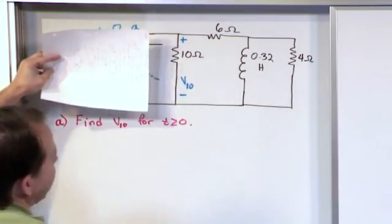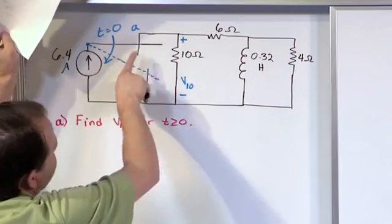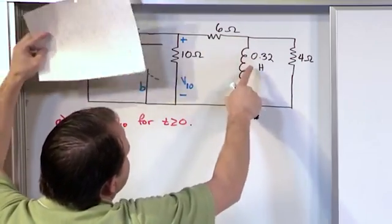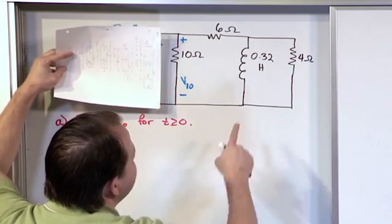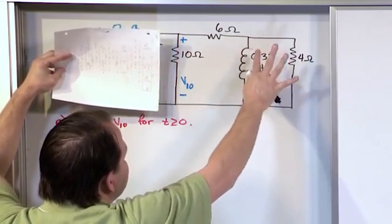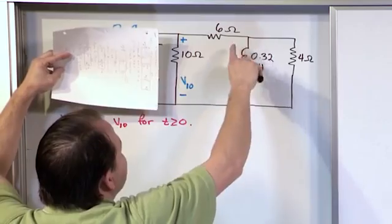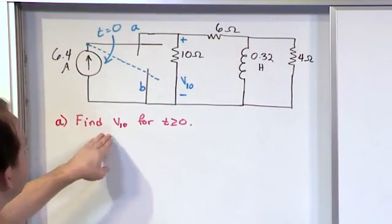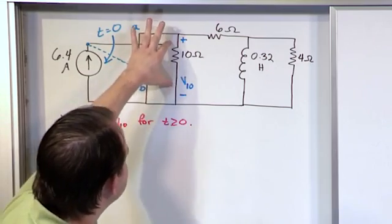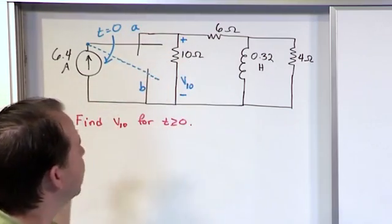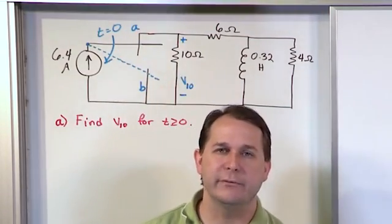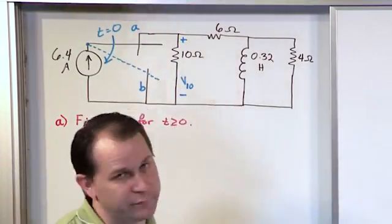It's not interacting with anything else. So before the switch moved, we've been dumping current in a steady state condition into this inductor. After we remove the source, the inductor is going to begin to then distribute that current out and some of it's going to go through here and some of it's going to go through here. But our question is what is the voltage, we're calling it V10 because it's across the 10 ohm resistor. What is the voltage as a function of time across that resistor after time zero?